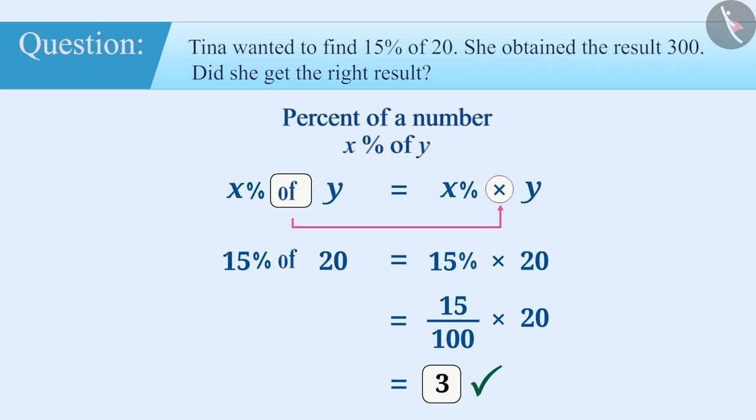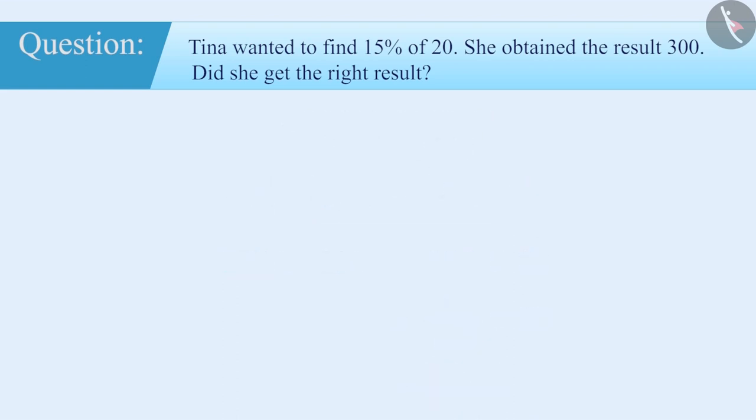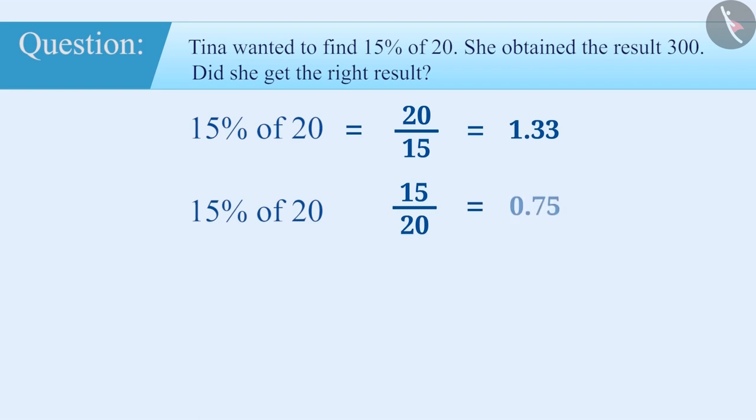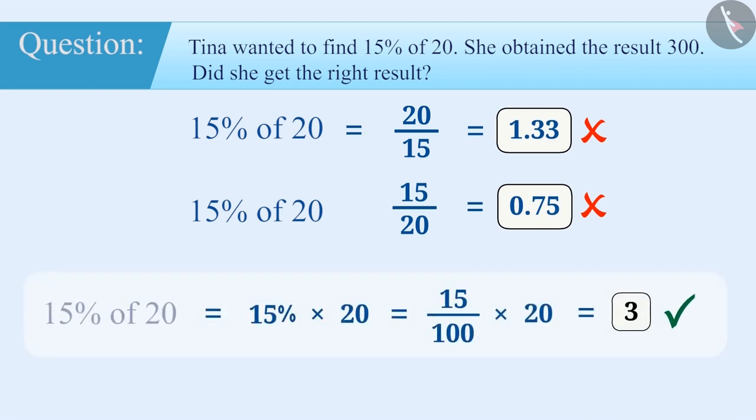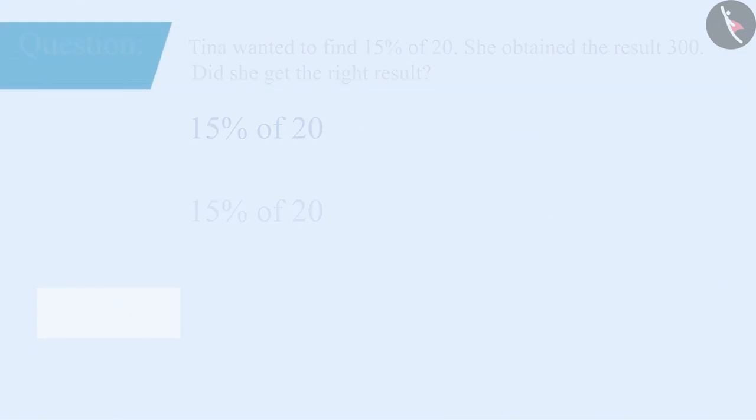Here, the correct answer is 3. Many times, it is observed that to get 15% of 20, students divide 20 by 15 or divide 15 by 20. This mistake is made because they fail to understand the operator 'of' properly. Such mistakes lead to incorrect results. Therefore, it is necessary to understand the use of the operator 'of' correctly. Next question.